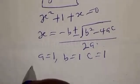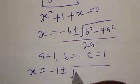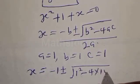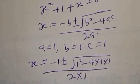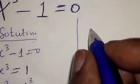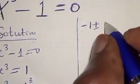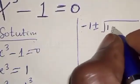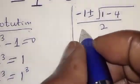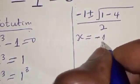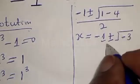Therefore, substituting in, we have X equals minus 1 plus or minus square root of 1 squared minus 4 times 1 times 1, over 2 times 1. That gives X equals minus 1 plus or minus square root of 1 minus 4, over 2, which is minus 1 plus or minus square root of minus 3, over 2.